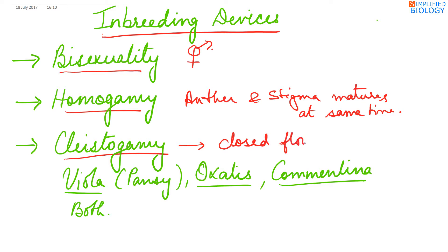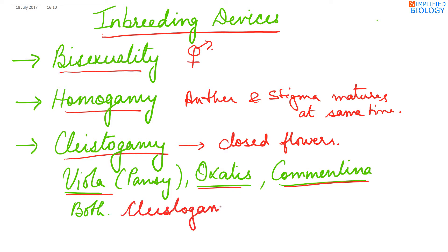When the flowers do not open up, self-pollination occurs. In plants like Viola (that is pansy), Oxalis, and Commelina, both types of flowers are present — that is cleistogamy, flowers that do not open up, and chasmogamy, flowers that do open up.